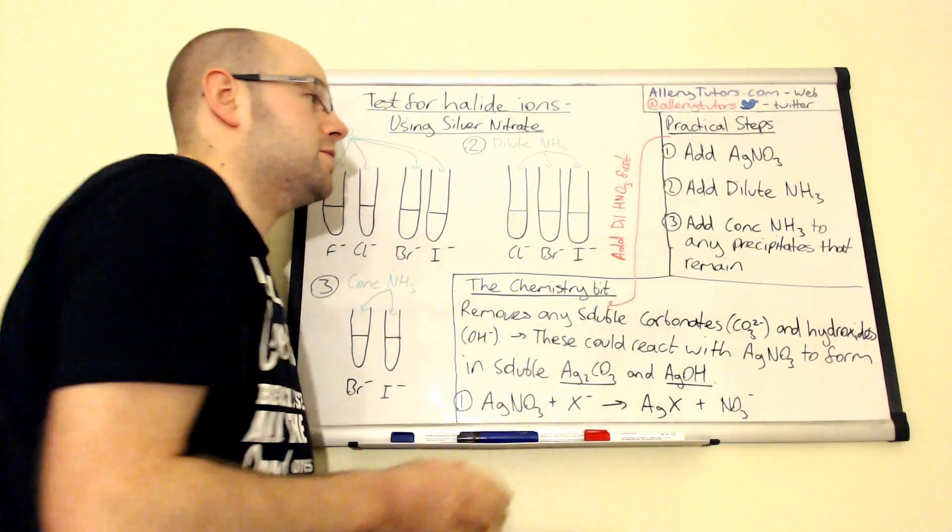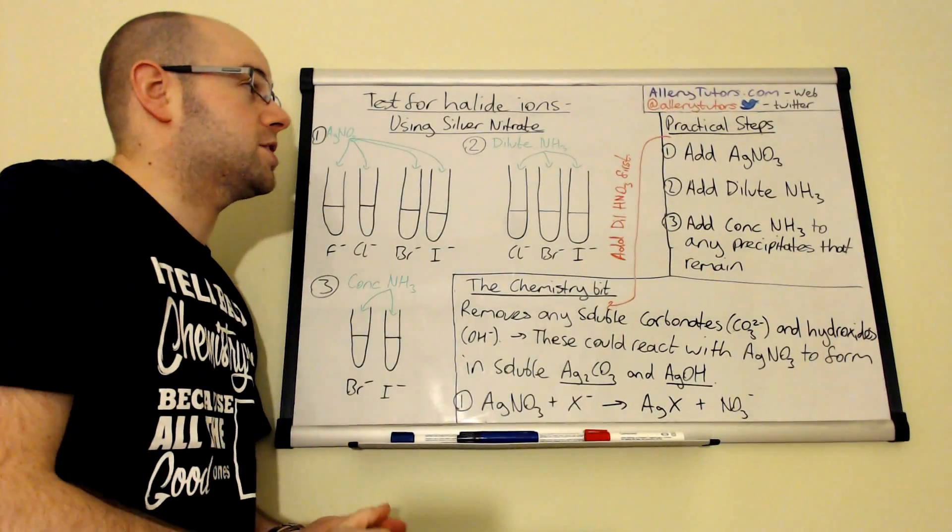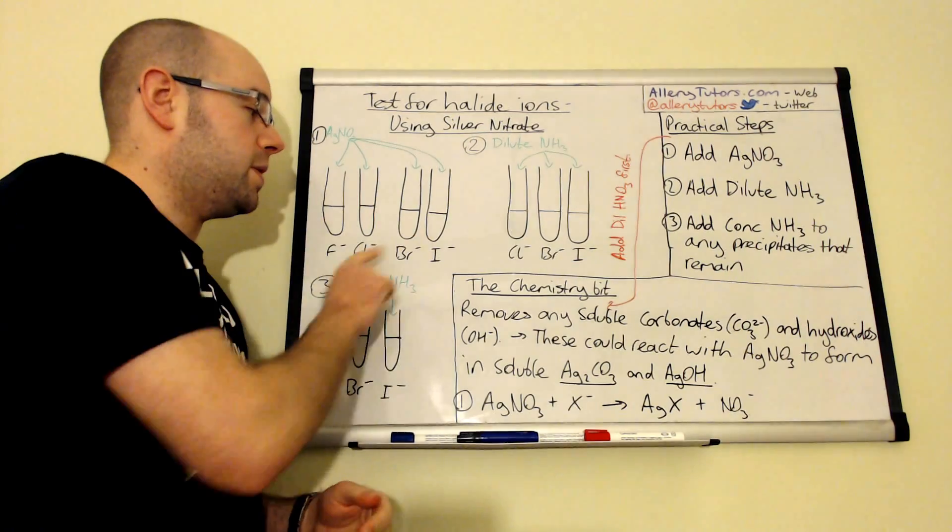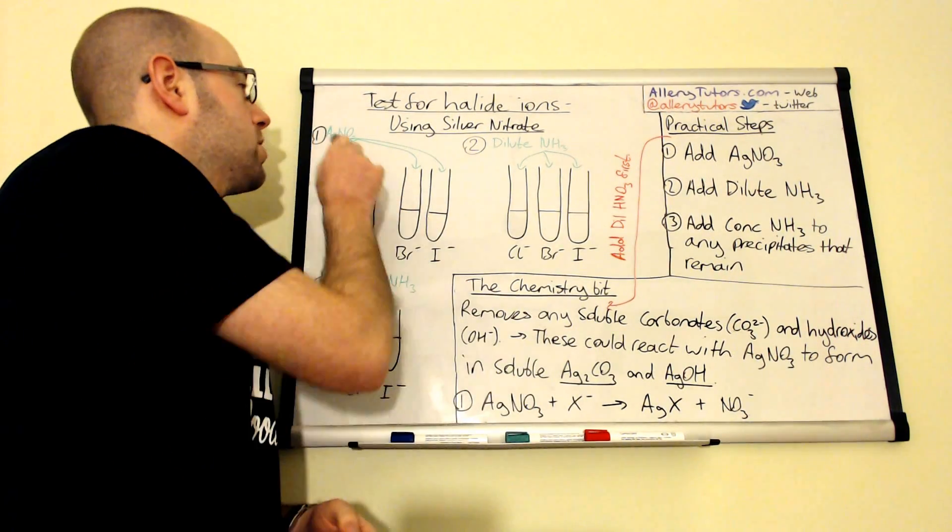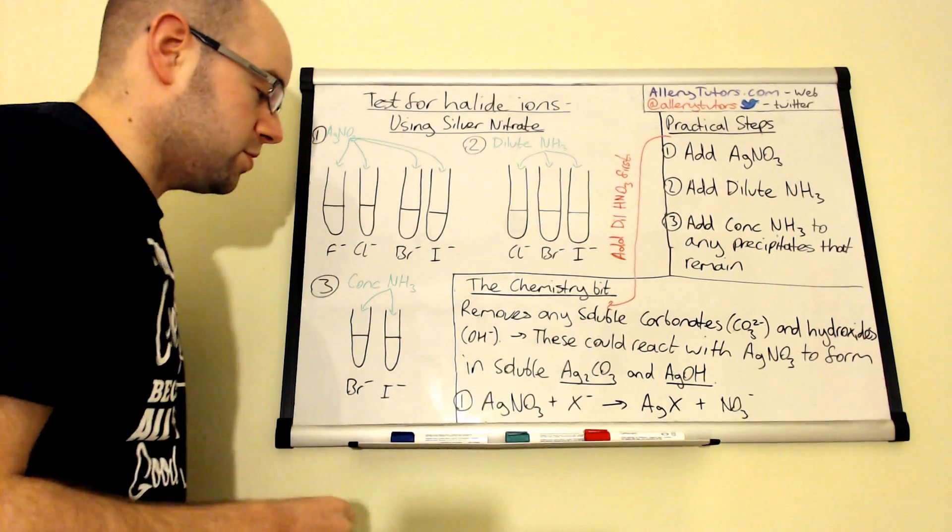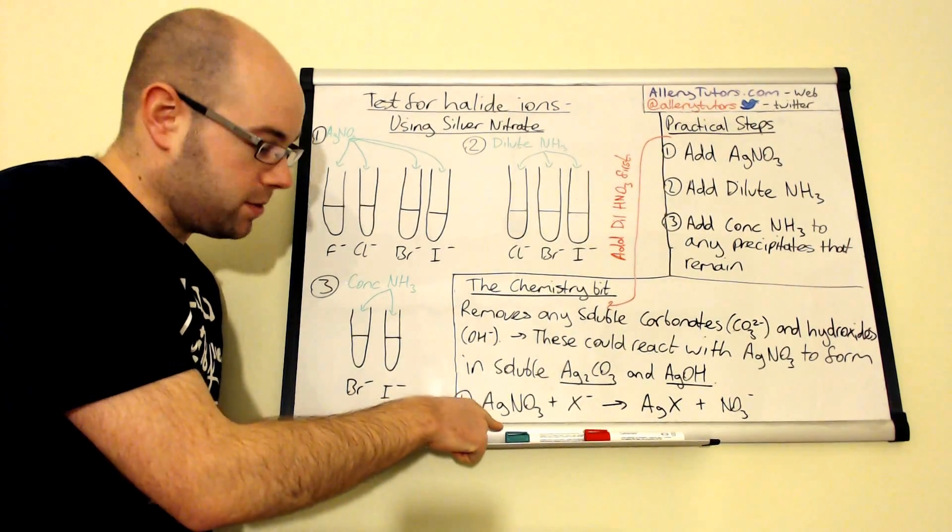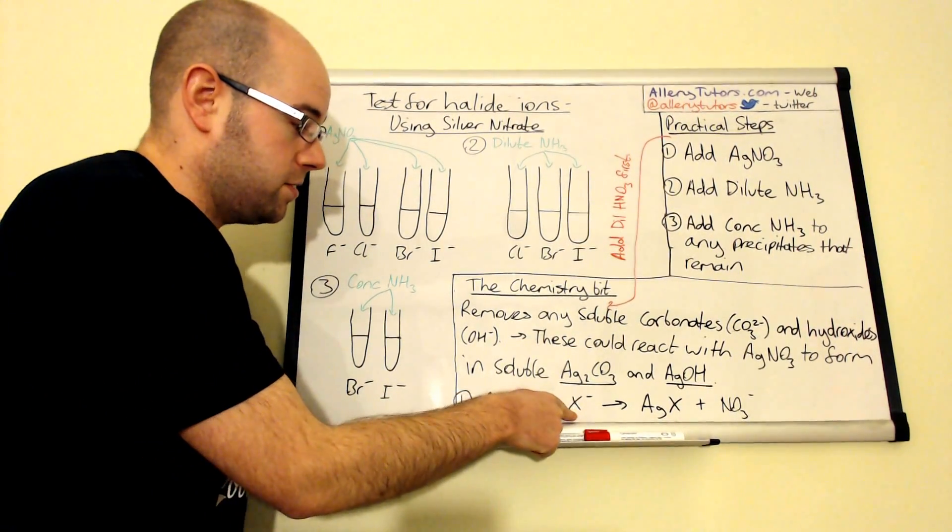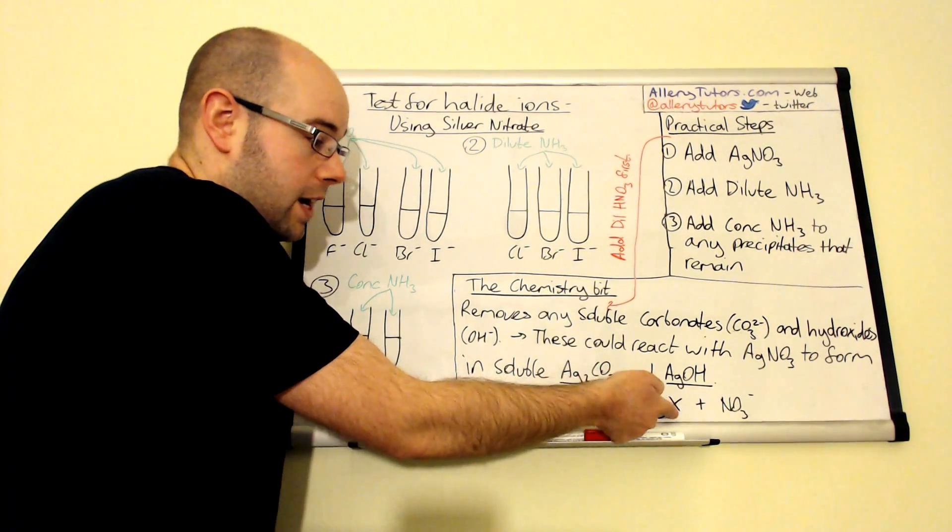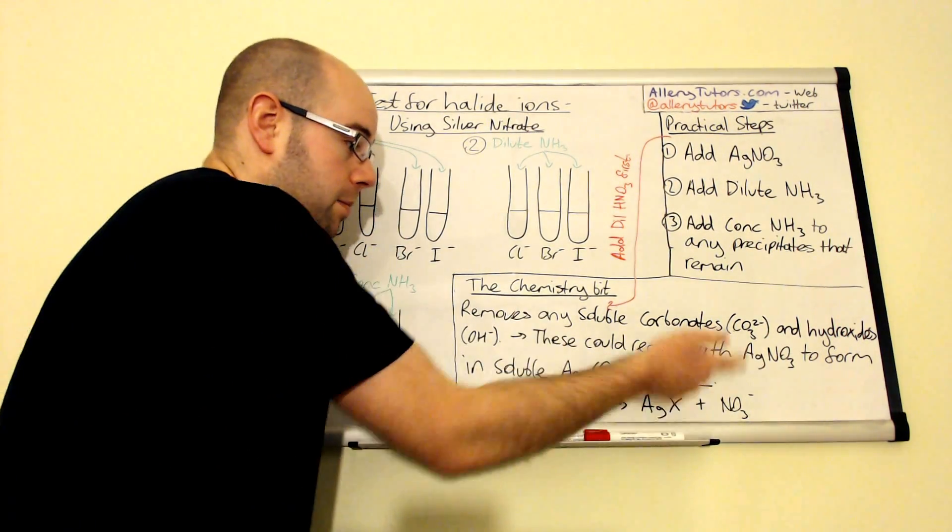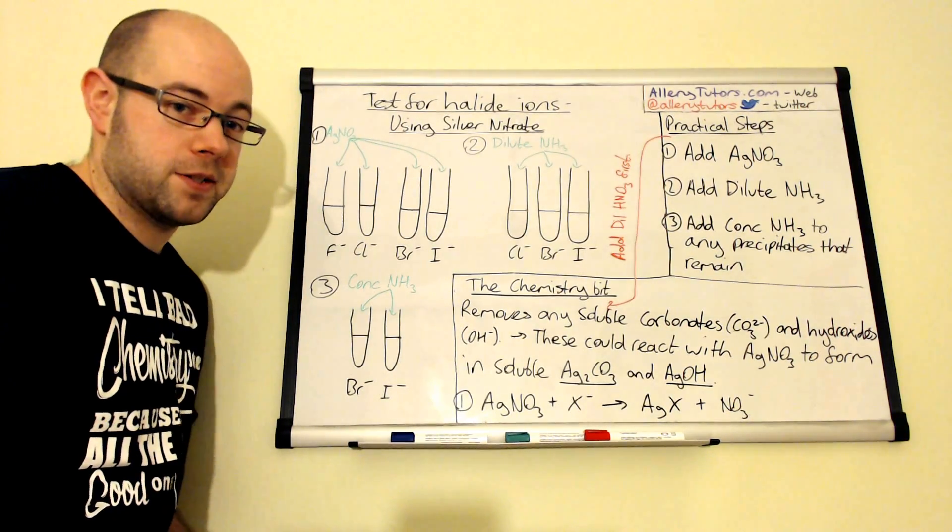Our silver nitrate is step one. I've got four halide ions here. When we add silver nitrate to these halogens, we get this reaction: silver nitrate added to the halide ion, I put X to represent the halogen, and that's going to form silver halides, depending on what the halogen is, plus nitrate ions as well.